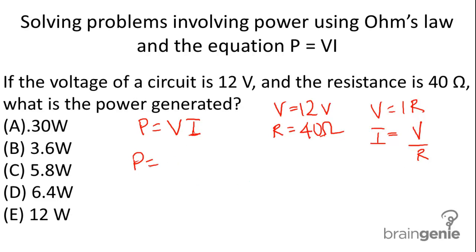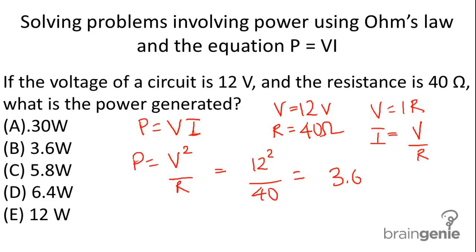We get P equals V squared divided by R. Now I plug in my information — I get 12 squared divided by 40 ohms — and I get a power wattage of 3.6 watts as my final answer.